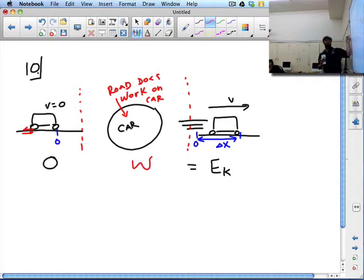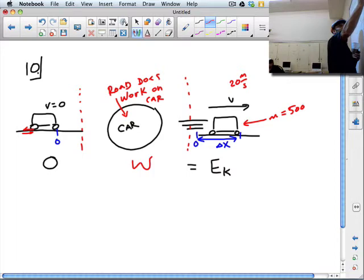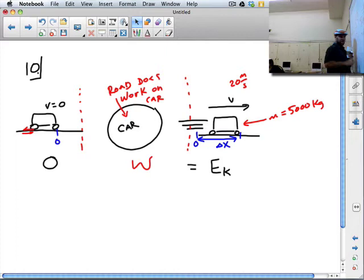Now, do we know anything about the force due to the road on the car? In this problem. Is there anything given there? So we don't know anything about work. We can't calculate it. Do we know anything about the speed of the car in the end? What is it? So we have a speed. We have a mass. What's the mass of the car? Everybody. What is it? 5,000. Okay. So we actually have everything we need to calculate EK. Right?